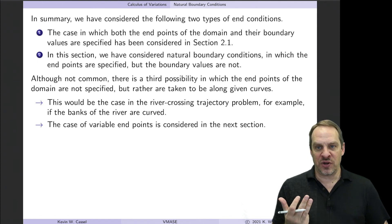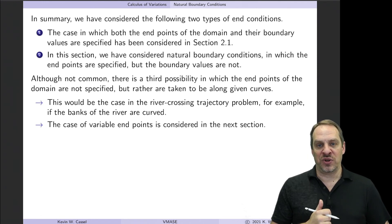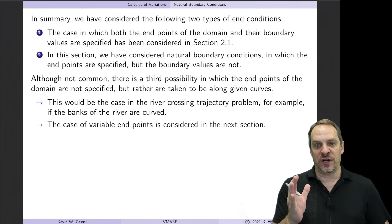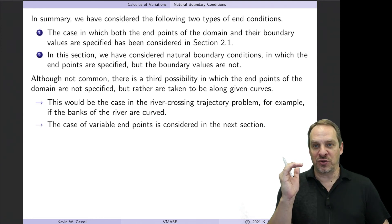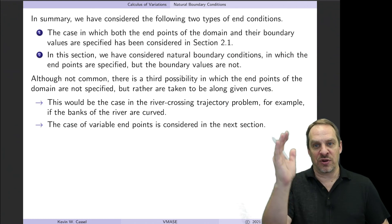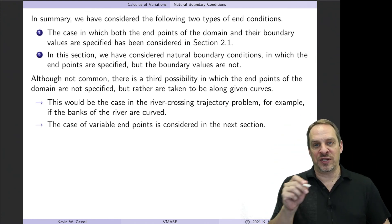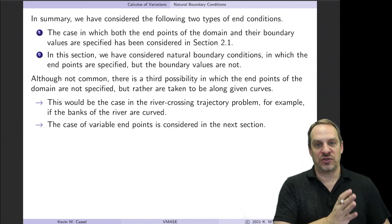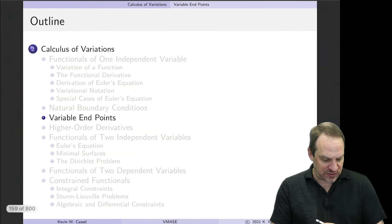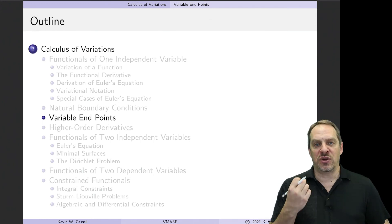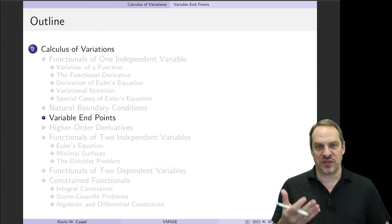There is actually a third possibility: variable end conditions, where we don't know u0 and u1, nor x0 and/or x1. In the river crossing problem, this would arise if the banks of the river were curved. Wherever we start determines x0 and wherever we end determines x1, but we don't know those starting and ending points. This is treated in the next section on variable endpoints.